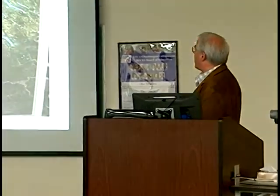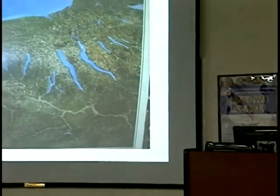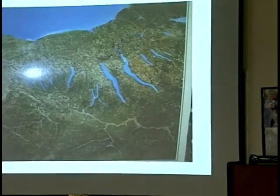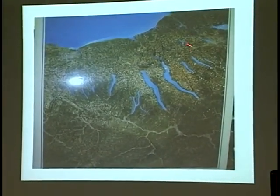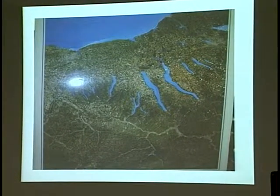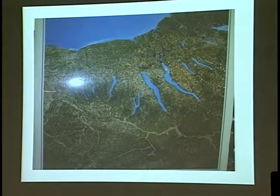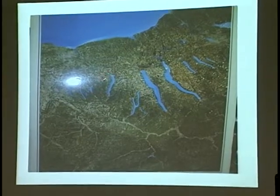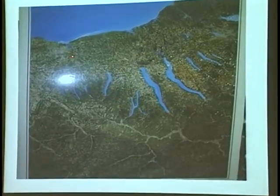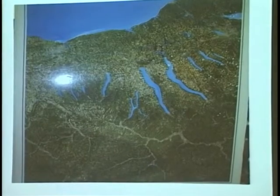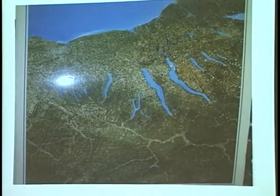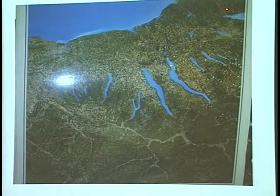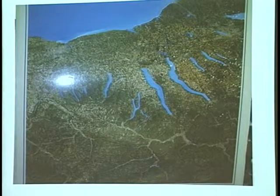First of all, to give some of you an idea of where Canandaigua Lake is located with regards to Chautauqua Lake. In this aerial photograph, this is an area showing the Finger Lakes region in central New York. This is Canandaigua Lake here, City of Rochester. We're located about 30, 35 miles southeast of Rochester, New York.